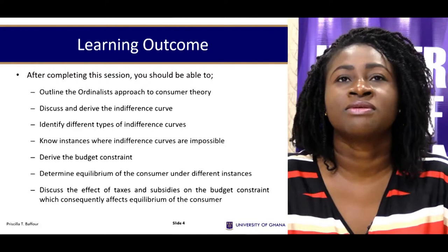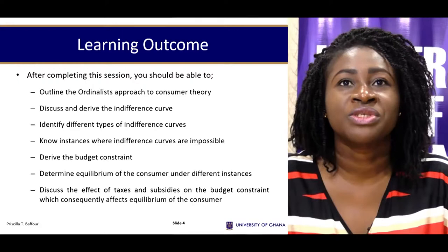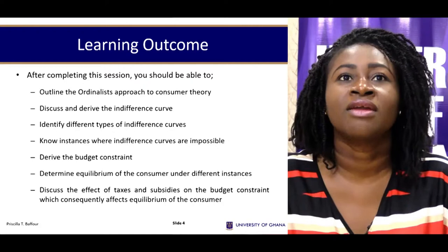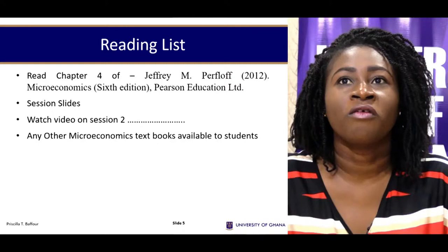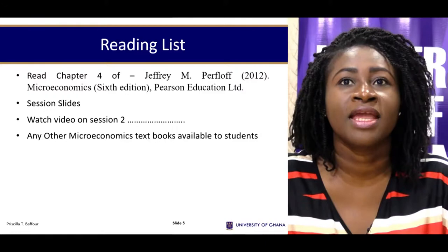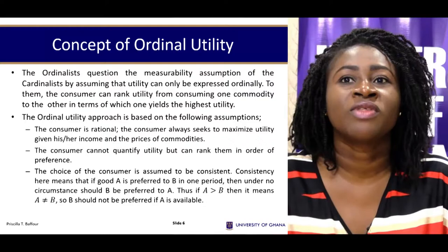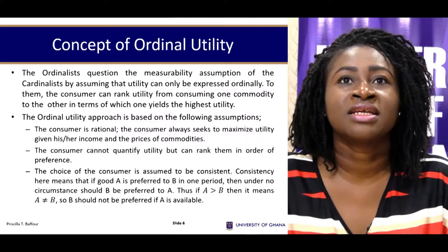At the end of the period you will have a good working knowledge of the ordinal utility approach to demand. The reading list for this section is Chapter 4 of Jeffrey M. Perloff's Microeconomics, or any other microeconomic textbook available to students. In terms of the ordinalist utility approach, the key question the ordinalists raise is the measurability assumption of the cardinalists.